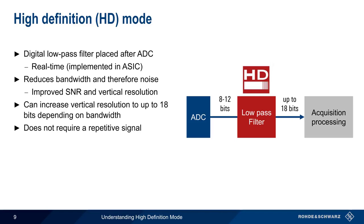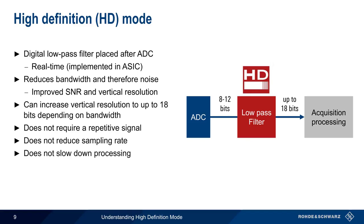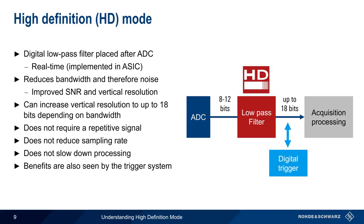Unlike averaging, high-definition mode doesn't require a repetitive signal or multiple acquisitions. And unlike high-resolution mode, high-definition mode doesn't reduce the sampling rate and doesn't slow down processing. In addition, the benefits of high-definition mode are also seen by the trigger system, something we'll come back to in a few moments.